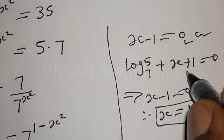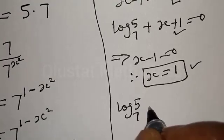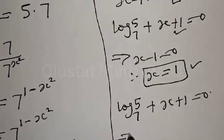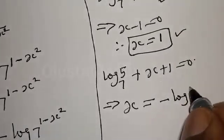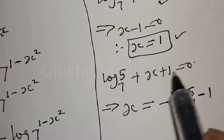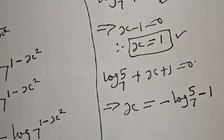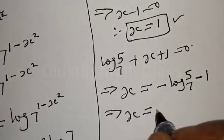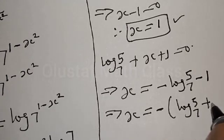Then let's take a good look at the other factor: we have log 5 base 7 plus x plus 1 equal to zero. Let's make x the subject of the formula. This implies that x is equal to minus log 5 base 7 minus 1. That is, if plus log 5 base 7 crosses to the other side it becomes minus, and if plus 1 crosses it becomes minus 1. This implies that x equals minus into log 5 base 7 plus 1.